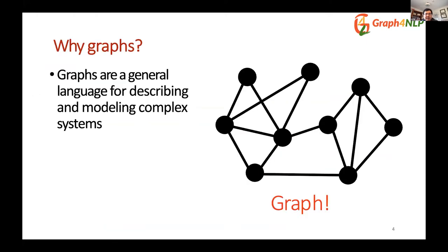The graph is a natural language for describing and modeling complex systems. A graph is a simple data structure composed of nodes and edges. Graph nodes can represent any kind of object you want to model in your system, and graph edges model the relationships or similarities between pairs of nodes.